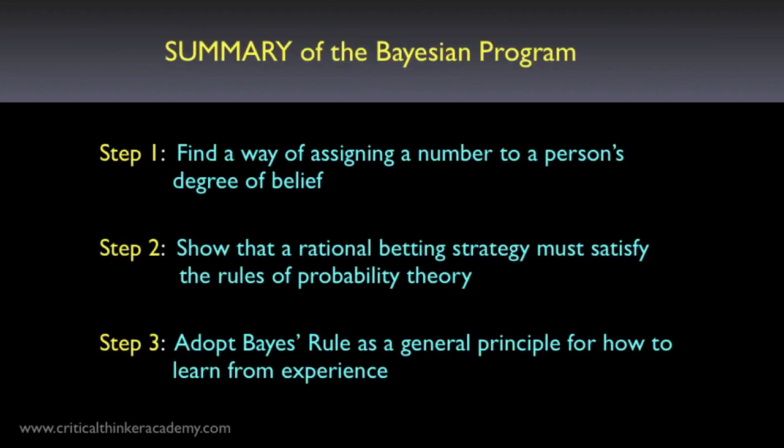Here's a summary of what we've been talking about. Step one in the Bayesian program is to find a way of numerically representing a person's degree of belief — we use betting rates to do this, and once we've got this, we can talk about rational and irrational betting strategies. In step two, we show that if our degrees of belief are coherent, then they'll automatically satisfy the basic mathematical rules of probability theory. And step three involves the use of Bayes' rule as a guide for how we ought to update our beliefs based on evidence.